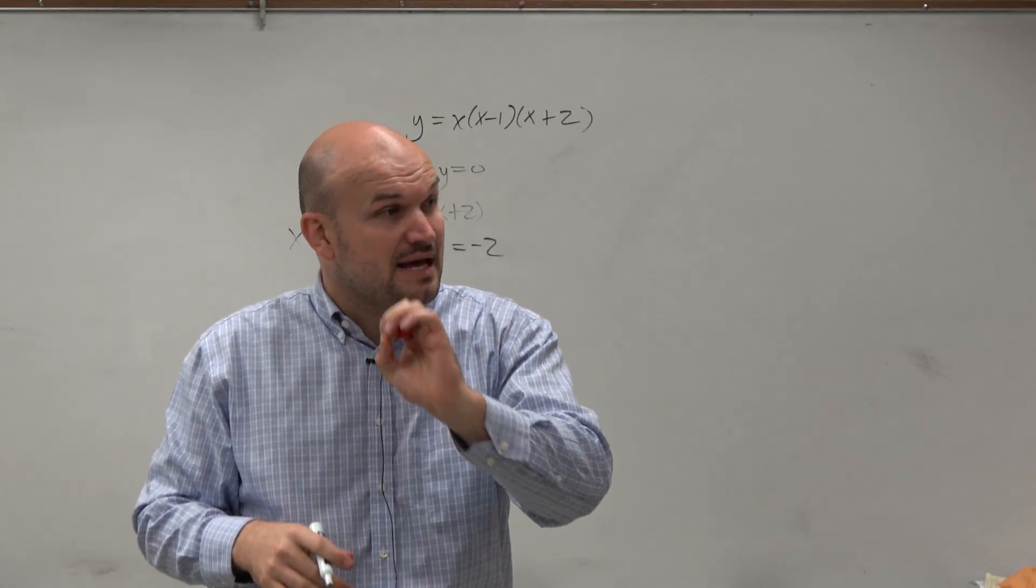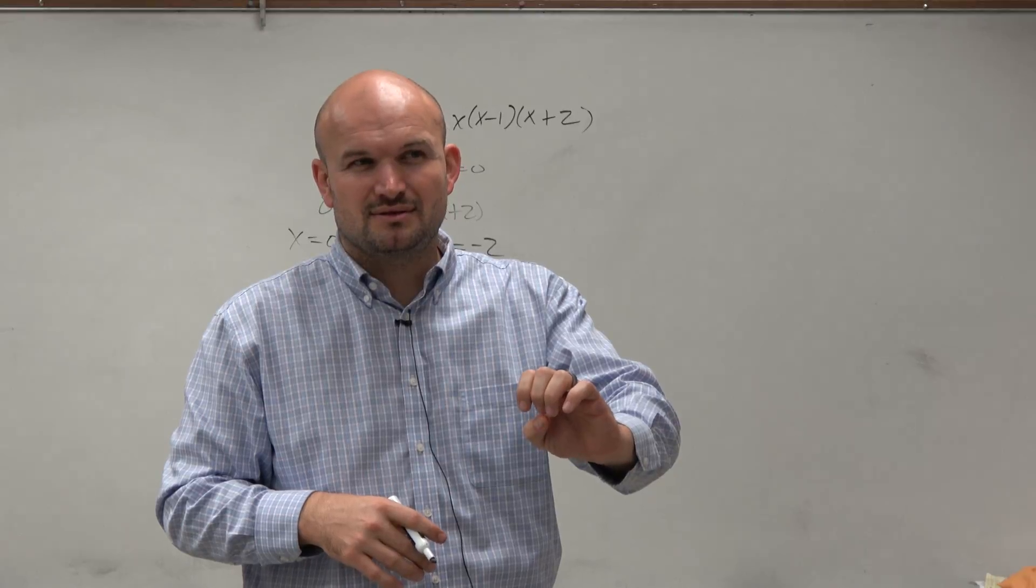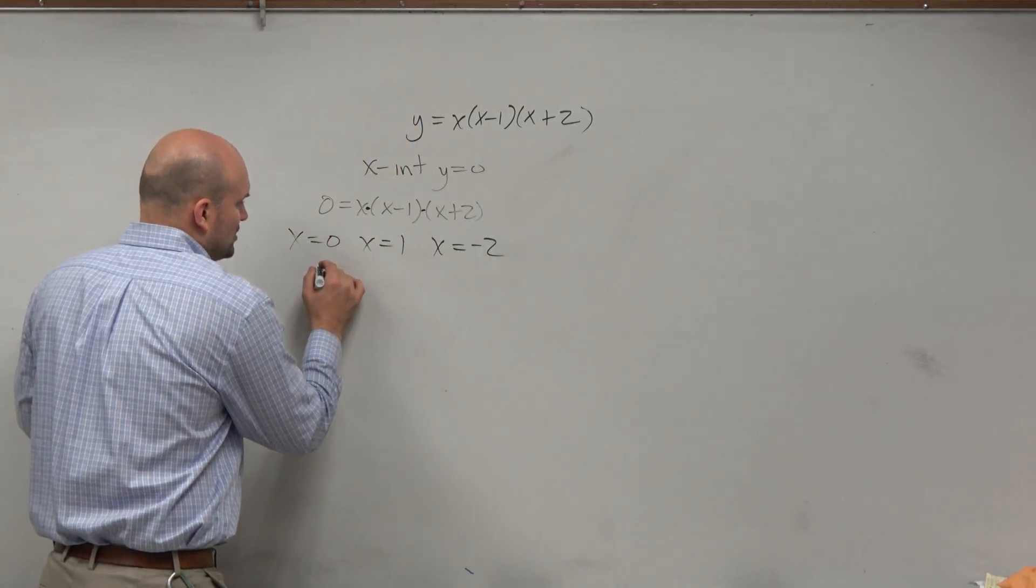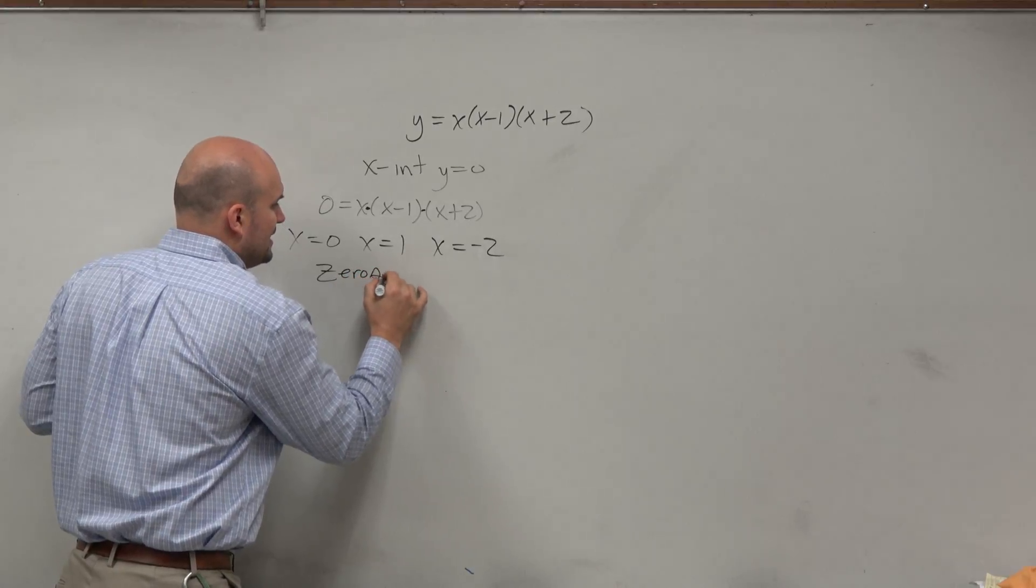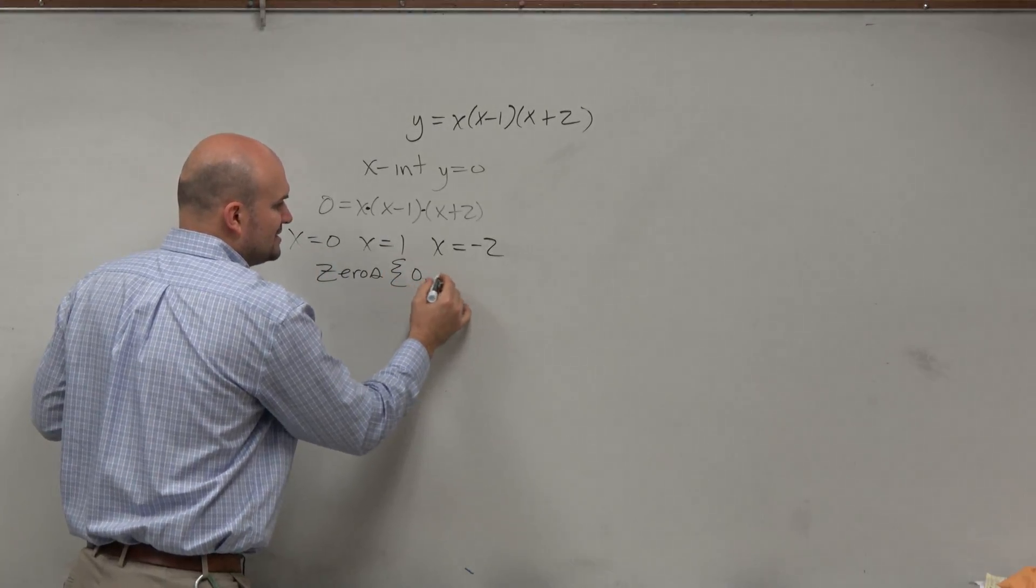Now, the values that make the function equal to 0, does anybody remember what we call those? It's going to be on your notes written up there, guys. But these are called the zeros. And what we're going to learn in this chapter is we're also going to talk about how we can write these in set notation.